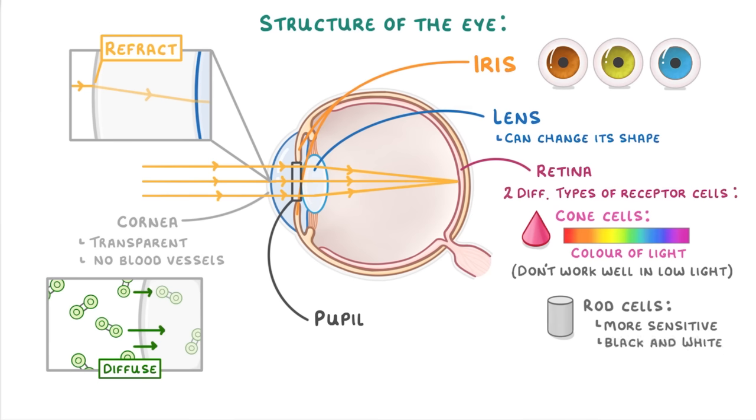And this is actually why you can't see colors when it's dark, because it's only your rod cells that are working.